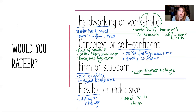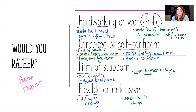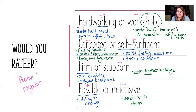When we look at all of these words, they all have a feeling attached to them — generally either positive or negative. Positive feelings are words that make you feel good or that you'd prefer to be described as; negative feelings are words that make you feel negatively. Hardworking is a positive word; workaholic is more negative. Conceited is more negative; self-confident is more positive. Firm is more positive; stubborn is more negative. Flexible is more positive; indecisive is more negative. All of these words carry a positive or negative feeling.